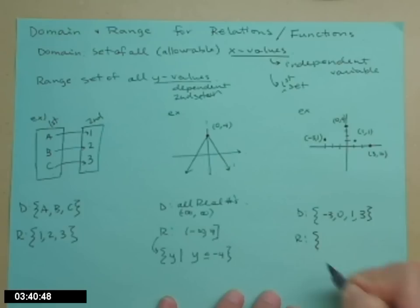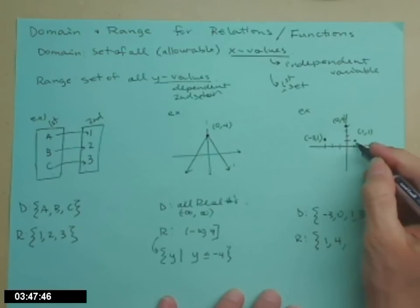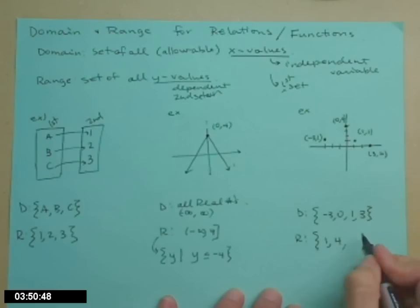The range, all the y values that we have. We have a y value of 1. We have a y value of 4. We have a y value of 1, I don't need to write it again. And I have a y value of 0. We're out.